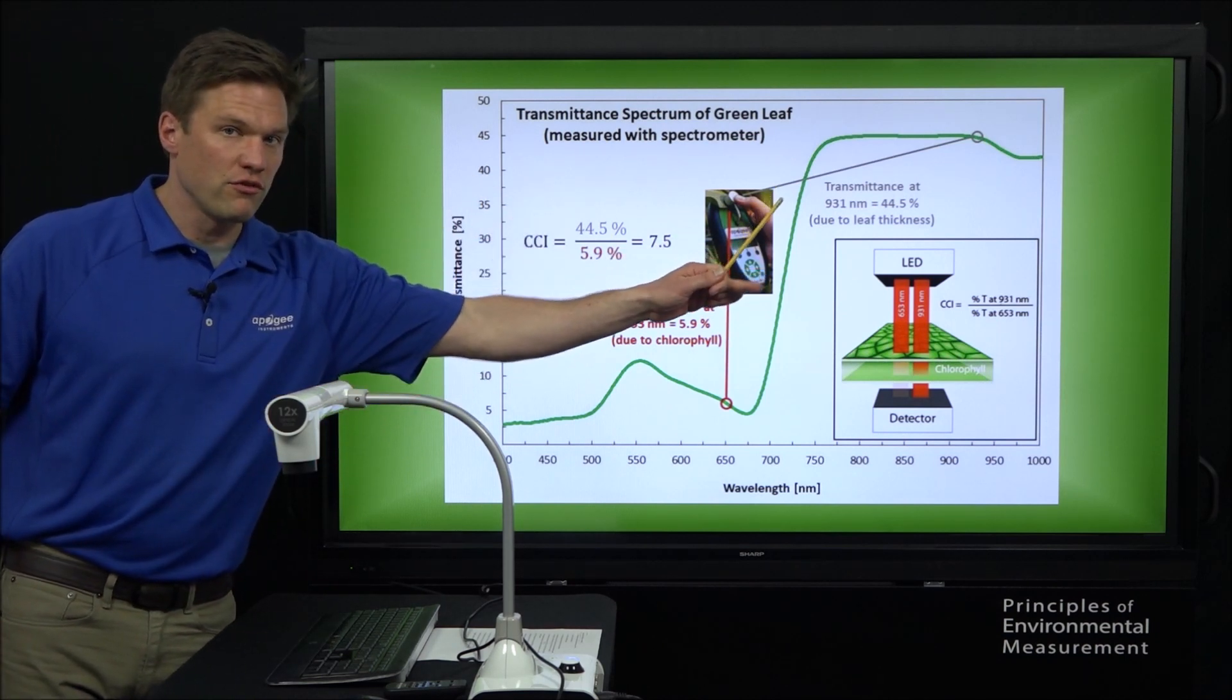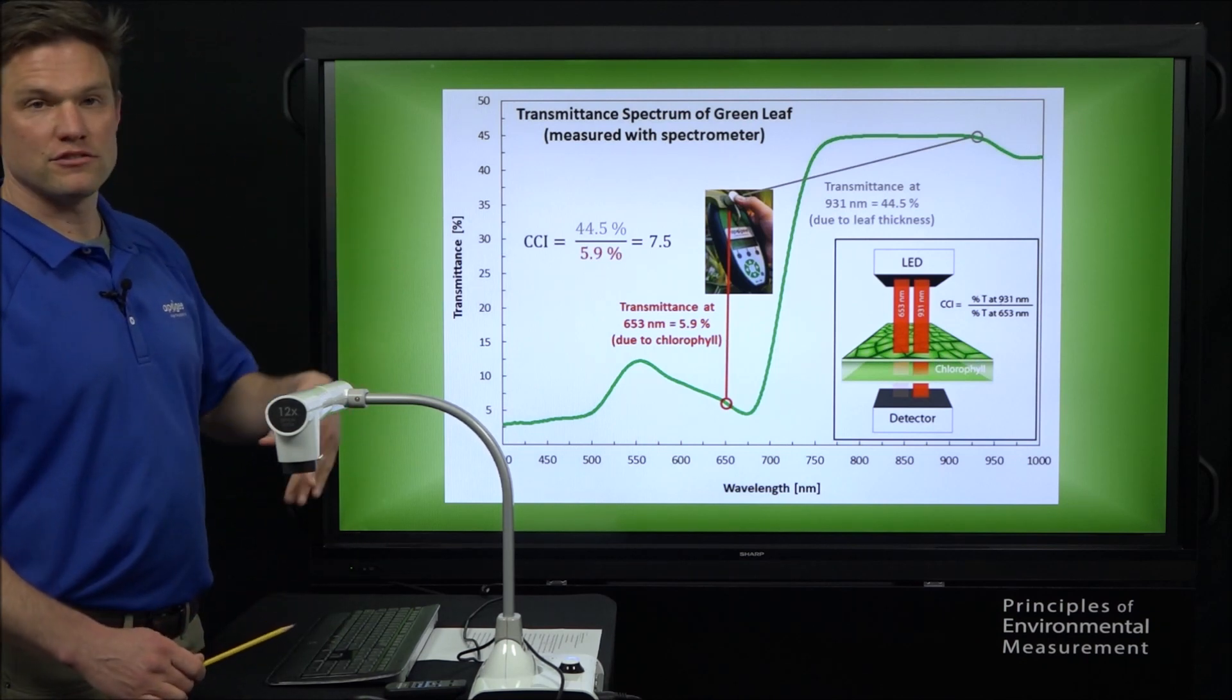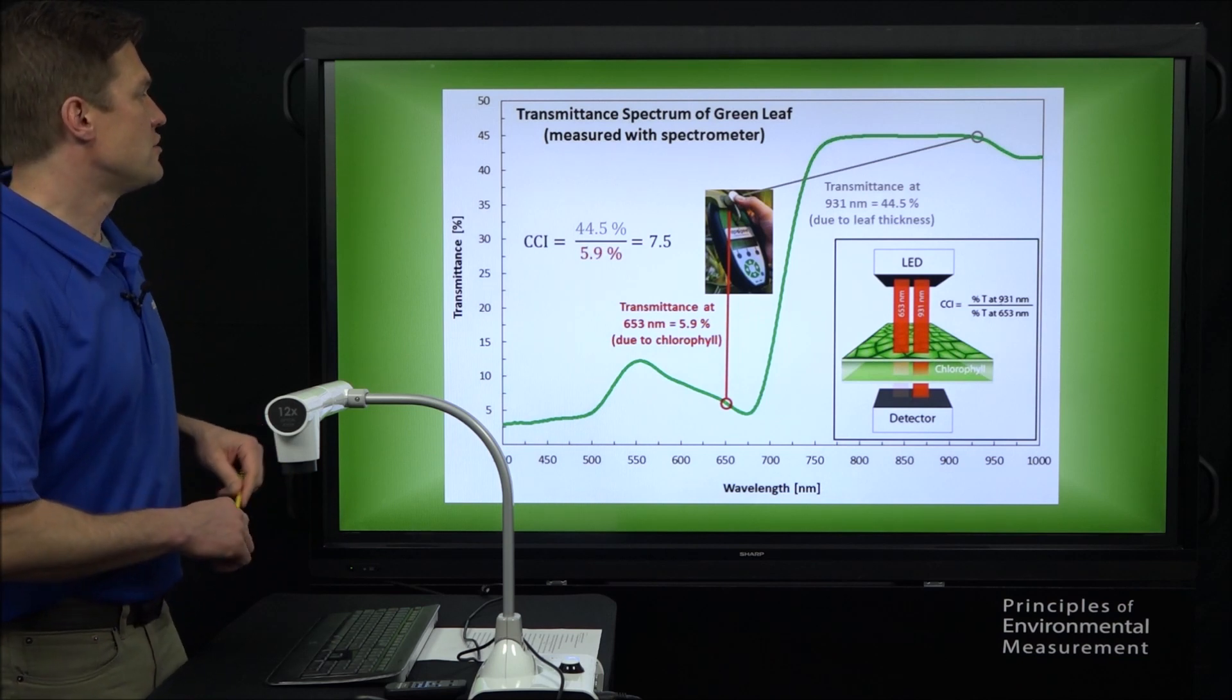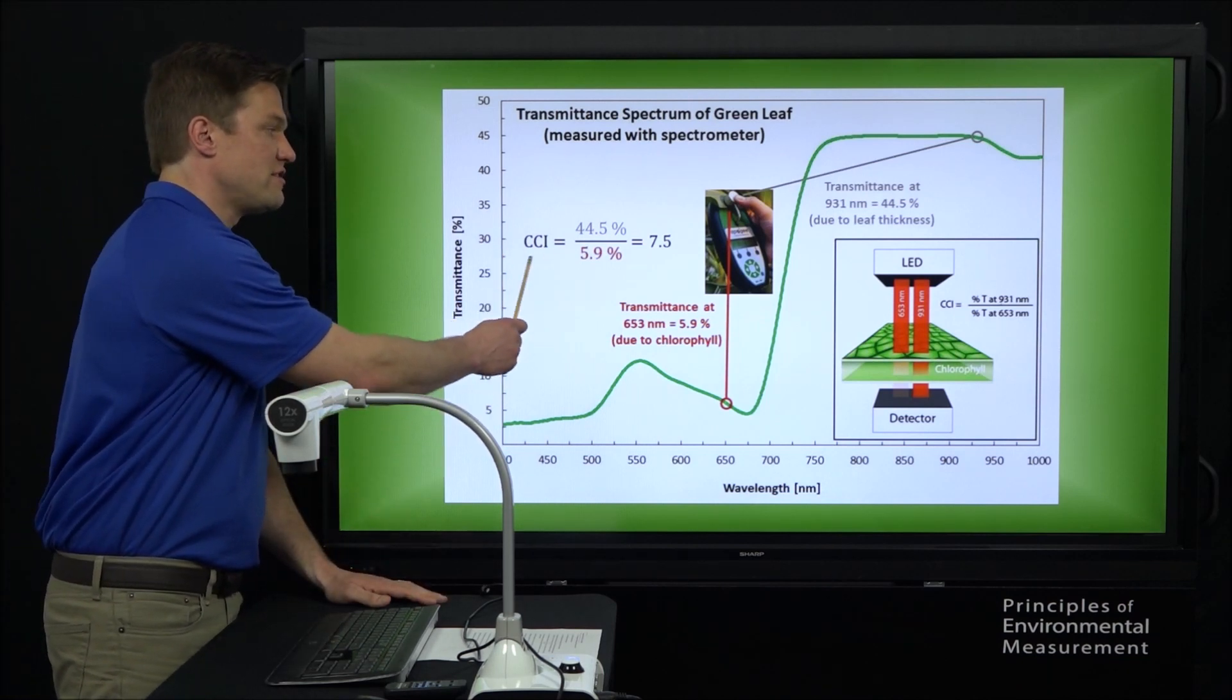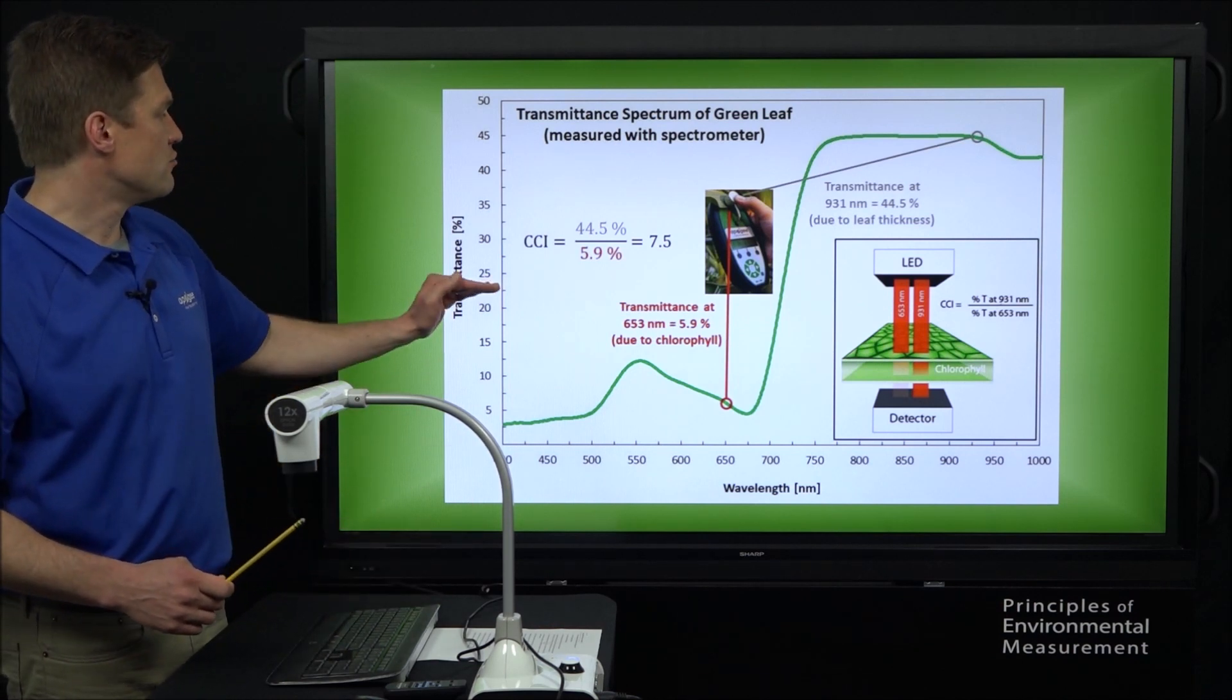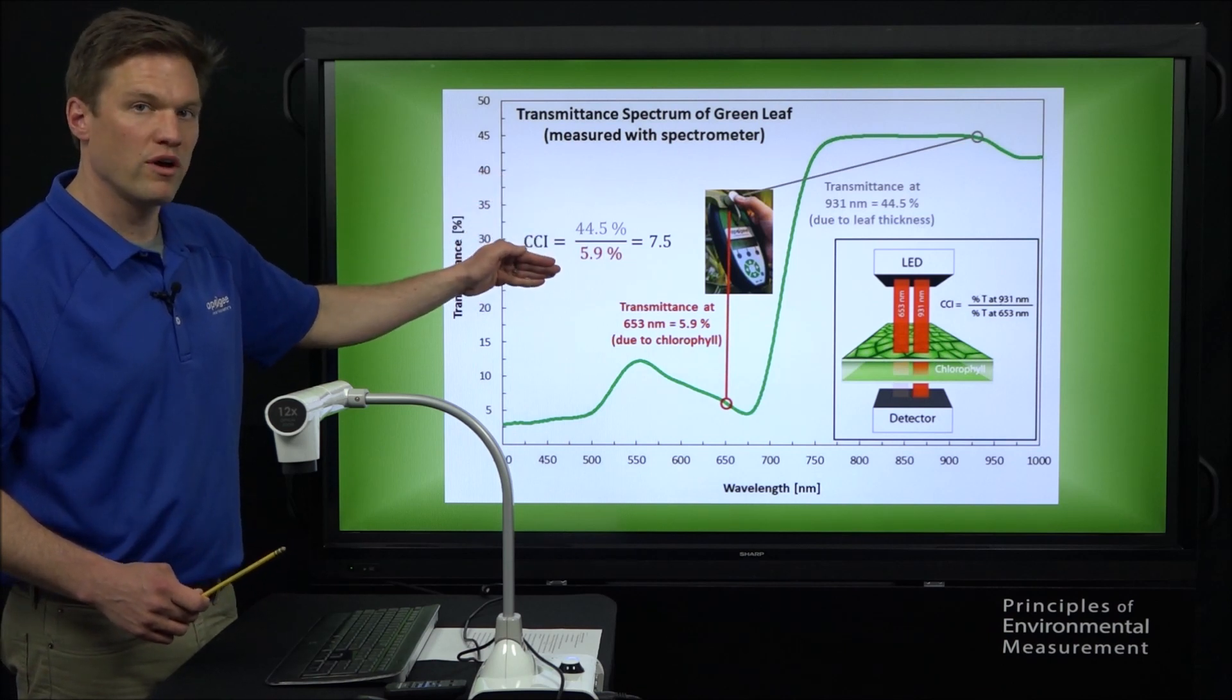Light at the longer near-infrared wavelengths can't be used by the plant, and so it will just pass through the leaf. The leaf doesn't do much with it or it gets reflected off. And so we can derive this CCI value, this chlorophyll concentration index or chlorophyll content index, as the ratio of transmission values at the near-infrared wavelengths and the red wavelength.